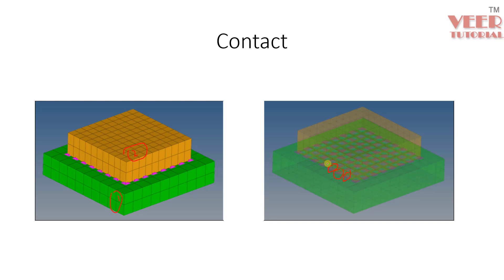In HyperMesh, there are multiple options and settings to create the contact. We can create contact in two ways. One way is by the auto contact option — we select two bodies and the software automatically applies the contact between them. Another way is doing it manually. So now let's learn about both options, and further we will learn about different setting options in contact.